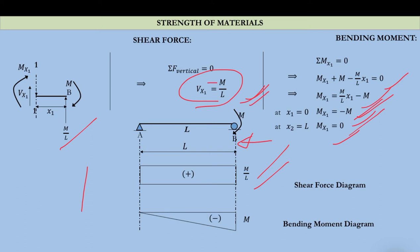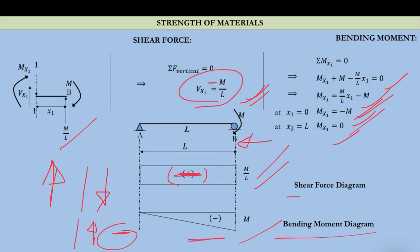The shear force will be negative — minus m/L — because the reaction is downward, and our sign convention makes this negative. Vx1 plus m/L equals zero, so Vx1 is minus m/L. The sign was only missing. The bending moment diagram shows a hogging bending moment — sagging is positive, but here it is negative, so it is a hogging bending moment. You have to be very careful with signs while doing the calculation.